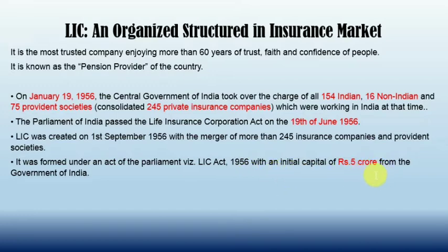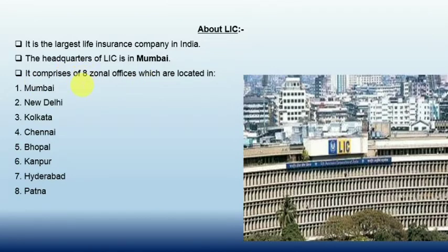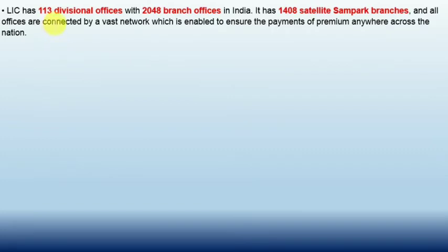LIC is the largest insurance company in India. The headquarter of LIC is in Mumbai, and it comprises eight zonal offices located in Mumbai, New Delhi, Kolkata, Chennai, Bhopal, Kanpur, Hyderabad, and Patna. LIC has 113 divisional offices with 2,048 branch offices in India. It also has 1,408 satellite branch offices.